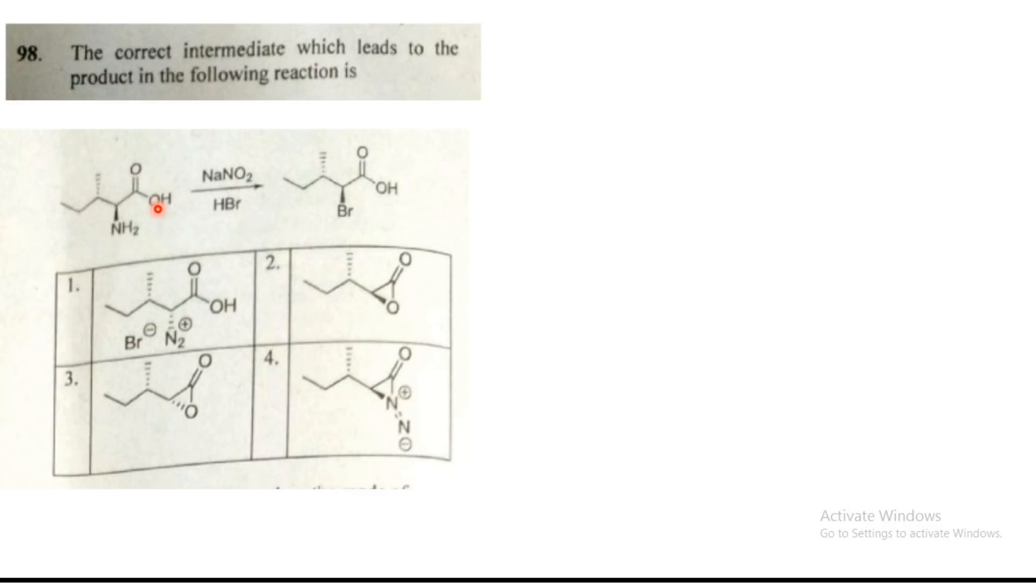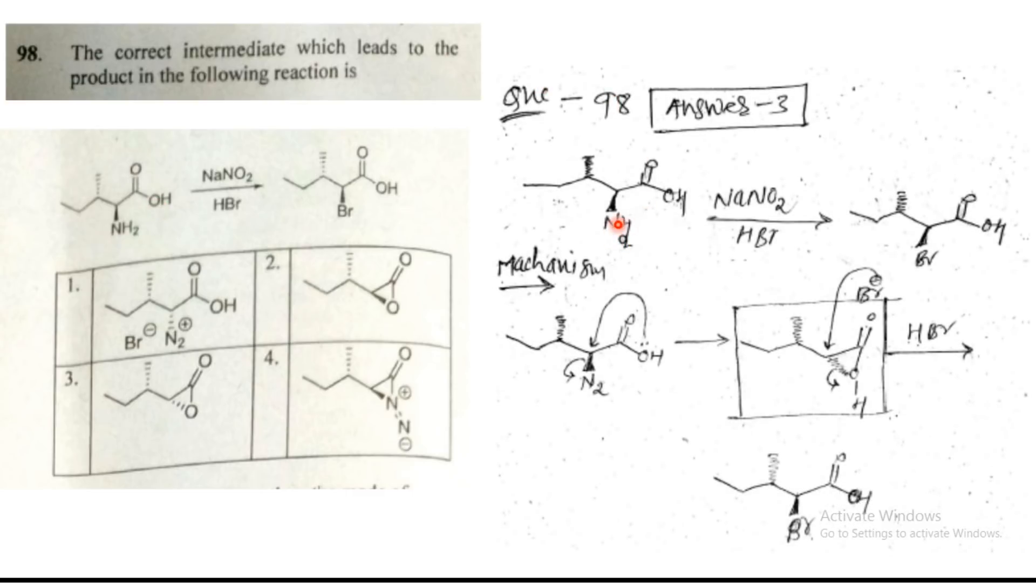So we have to see which one should be the intermediate in our reaction. You can see here this NH2 will convert to N2 in the same plane, where this O will attack from the backside. So that's what this is coming from the backside, and this should be the intermediate. And this is the intermediate wherever they have given in our answer. There is no any other intermediate which is correct as per the mechanism.